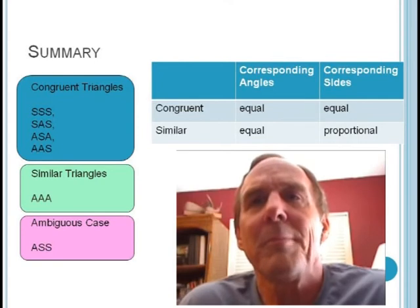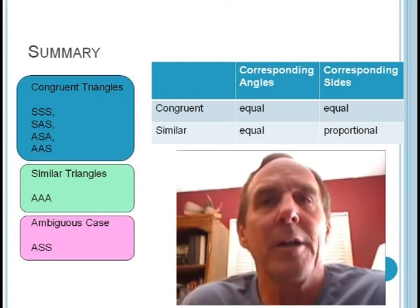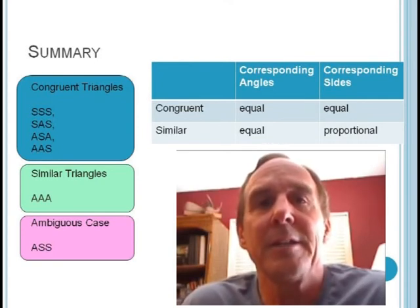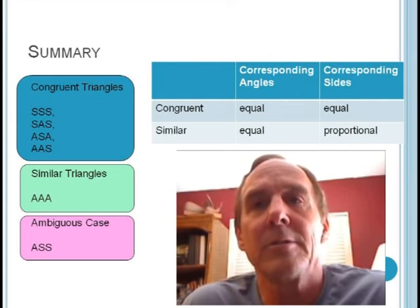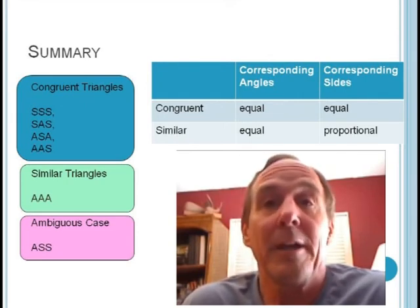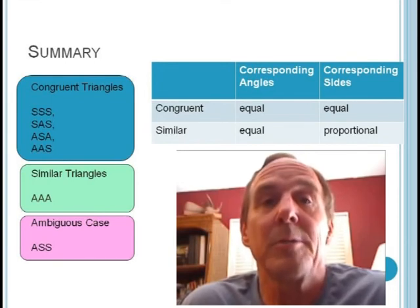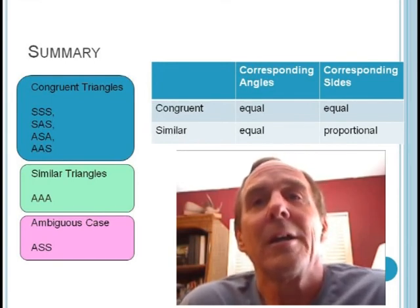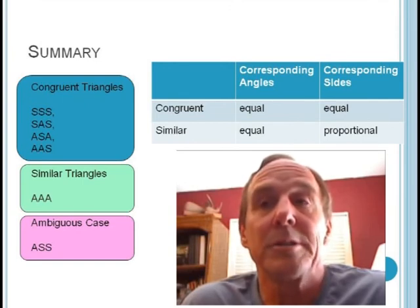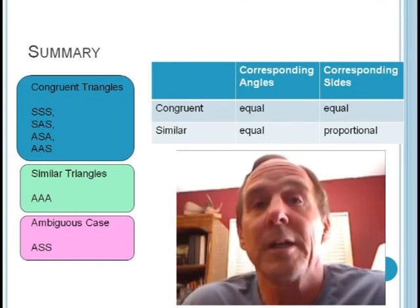So in summary, matching three corresponding parts of two triangles will guarantee congruence in every case except angle, angle, angle, which shows that they are similar, and ASS, or pain in the ass case, which is ambiguous and really shows nothing. Congruent triangles have congruent angles and congruent sides, while similar triangles have congruent angles and proportional sides. So I hope you found this video helpful. Please feel free to leave comments and suggestions, and thanks for watching.